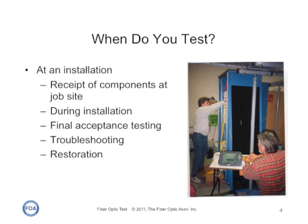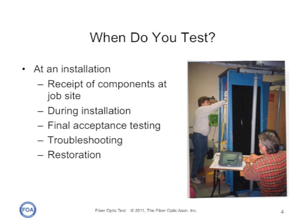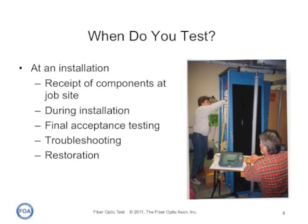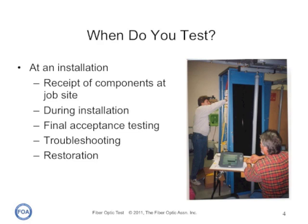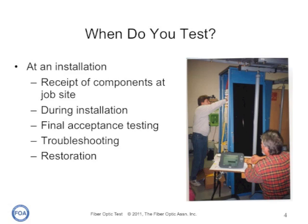When components are tested at an installation, they'll generally be first tested upon receipt at the job site to make sure that the proper components have been received. They'll be tested again during installation — for example, when splices are made or connectors are put in. There'll be final acceptance testing after the complete cable plant is finished to make sure that it meets its loss budget. If there's a problem, they'll be testing for troubleshooting during the installation. And of course, later on, they'll be testing for restoration in case something happens, like a cable cut, that requires the cable plant be repaired.